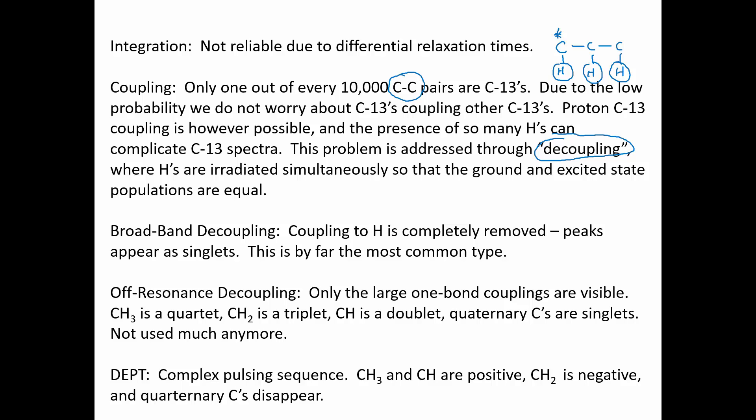Most of the spectra we'll see are broadband decoupled spectra. In a broadband decoupled spectrum, the coupling to hydrogen has been completely removed and all peaks appear as singlets — this is by far the most common and most quickly acquired type of spectrum. If you need information about how many hydrogens are attached to a carbon, there's an older technique called off-resonance decoupling, where you partially irradiate the spectrum. This preserves only the large one-bond couplings, so CH3 appears as a quartet, CH2 as a triplet, CH as a doublet, and a quaternary carbon as a singlet.